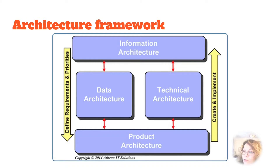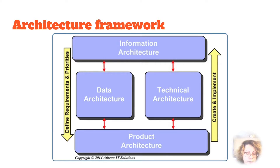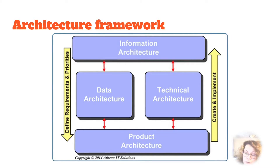The BI framework is composed of four architectural layers: information, data, technical and product architecture. The information architecture defines the what, who, where and why for BI or analytical implications.